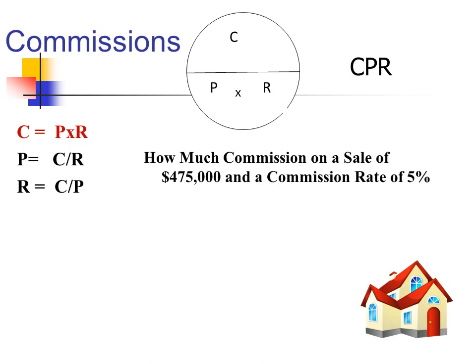Here is a commission problem. How much commission would be due on a sale of $475,000 and a commission rate of 5%? We want to find C, commission. We use P times R, and we put in the known factors: $465,000 for price, $0.05 for the rate — 5% commission rate. And our commission on this deal would be $23,750.